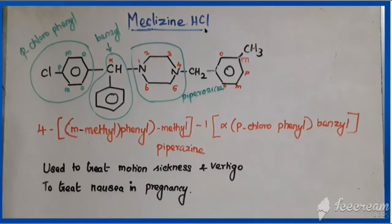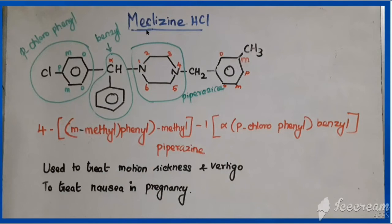The next drug is meclizine hydrochloride, which has a similar structure to chlorcyclizine. In chlorcyclizine, the fourth position of piperazine has a methyl group. In meclizine, one hydrogen of that methyl is replaced by a meta-methylphenyl group — hence it can be called methyl-phenyl-chlorcyclizine, otherwise called meclizine. 'Me' indicates metamethylphenyl and 'clizine' indicates chlorcyclizine.